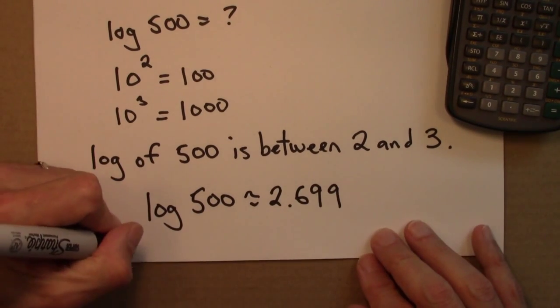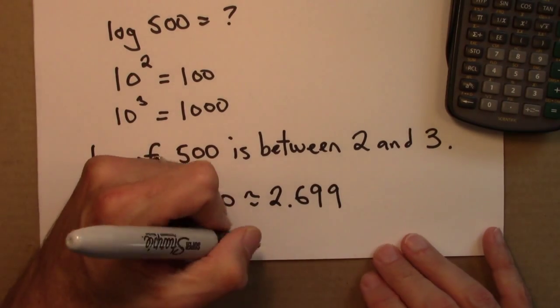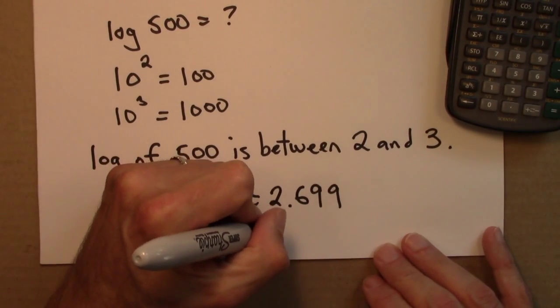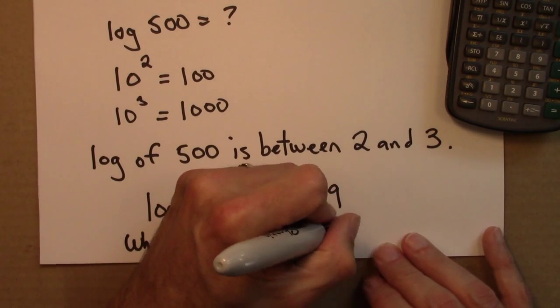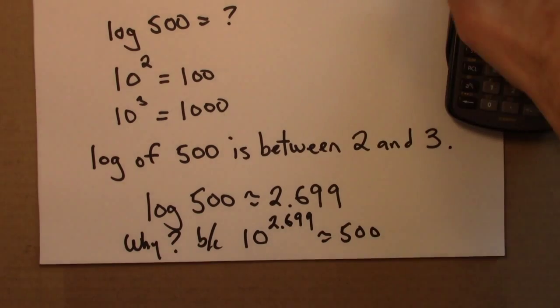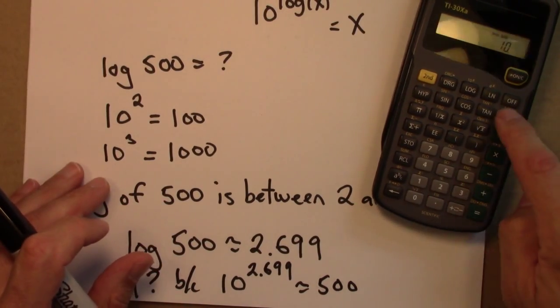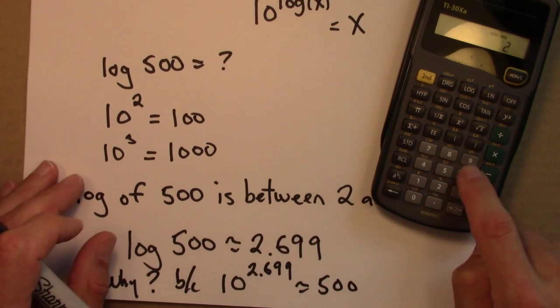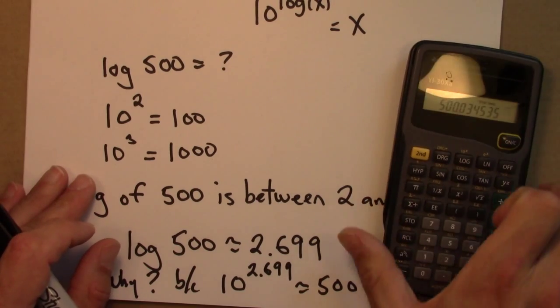Why? Well, because 10 to the 2.699 is going to be about 500. I can test that out on a calculator too. 10 raised to the 2.699. Sure enough, it's about 500, 500.03.